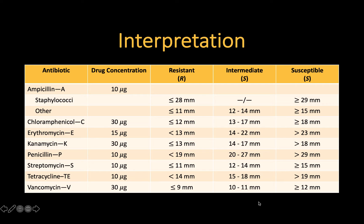The table has a list of antibiotics and their concentrations, and it also lists the cutoff for each antibiotic. For example, in the case of erythromycin, the bacteria are resistant if the inhibition zone is less than 13 millimeters in diameter. The bacteria are susceptible if the inhibition zone is greater than 23 millimeters, and intermediate in between those measurements.